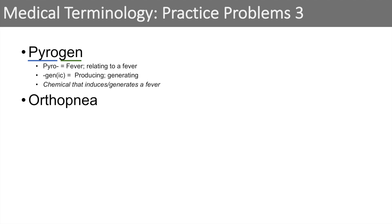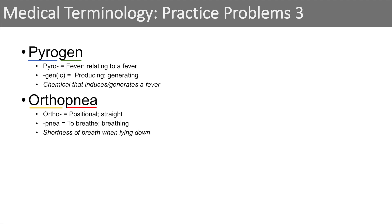The next word we're going to look at is orthopnea. This word is a little bit tricky. If you look at ortho, ortho has to do with position — it means straight. You can think of orthodontist; when you go to an orthodontist they straighten your teeth. And pnea means to breathe or breathing. So orthopnea — it's positional breathing — but really it means a shortness of breath when lying down. When you think about it, it has something to do with position and breathing, and it's actually shortness of breath when lying down.